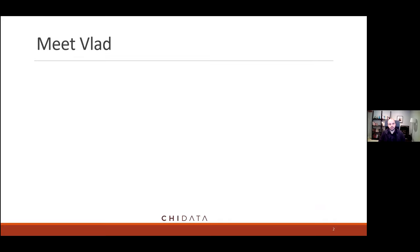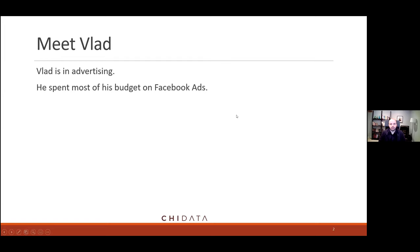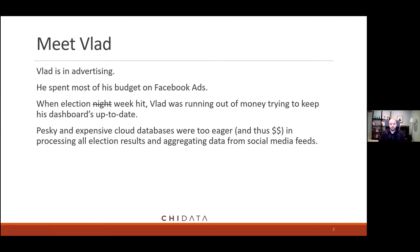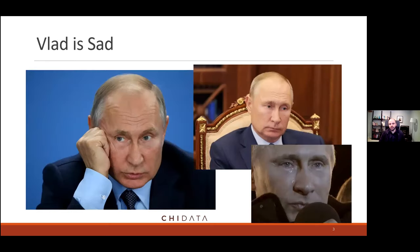I want to start with a story about a guy named Vlad. The US had an election pretty recently, and Vlad is in advertising. He spent a lot of his budget on Facebook ads leading up to the election. When election night turned into election week, Vlad was basically running out of money to keep his dashboard up to date — pulling in data from Twitter, polling stations, and county boards. He ran out of money and had to start turning things off. Vlad got very sad, not just because he ran out of money, but because his favorite candidate lost the election.